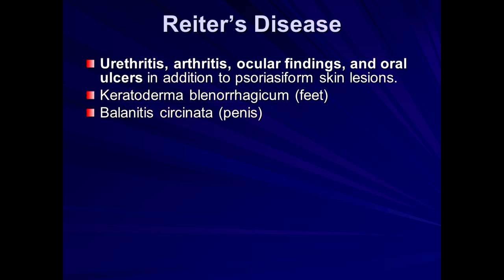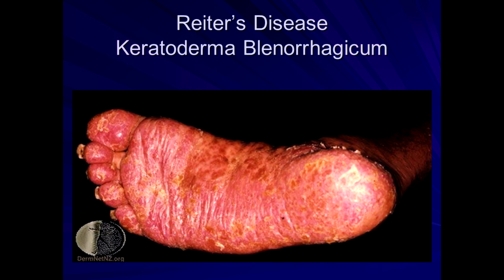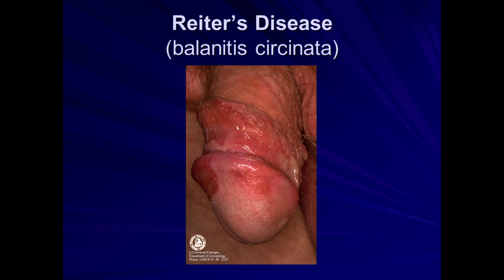Finishing our tour through connective tissue disease findings: Reiter's disease — patients develop arthritis, skin findings, ocular findings, oral ulceration, and pain with urination. They can develop skin lesions resembling psoriasis, plaques on the feet called keratoderma blennorrhagicum, and balanitis circinata. On the feet, patients come in with horribly scaly red plaque formation, and they tell you they have pain with urination, eye findings — and it turns out to potentially be Reiter's. On the penis you see eroded shiny patches with erythema — balanitis with this circinata-like wavy border appearance.